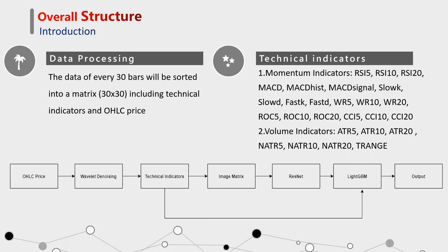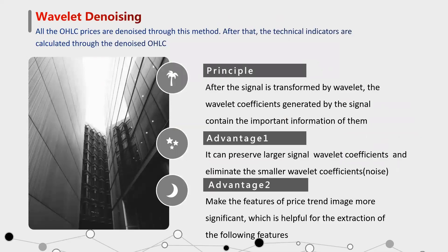The first method is wavelet denoising. Wavelet denoising is an effective method to separate signals from noise in many practical applications, and now it is used in the financial trading algorithm. The principle is: after the signal is transformed by wavelet, the wavelet coefficients generated by the signal contain important information. After decomposition, the wavelet coefficients of the signal are larger, while the wavelet coefficients of the noise are much smaller. One advantage is that it can preserve larger signal wavelet coefficients and eliminate the smaller noise coefficients. The second advantage is that it makes the features of the price-trained image more significant, which is helpful for the following feature extraction.